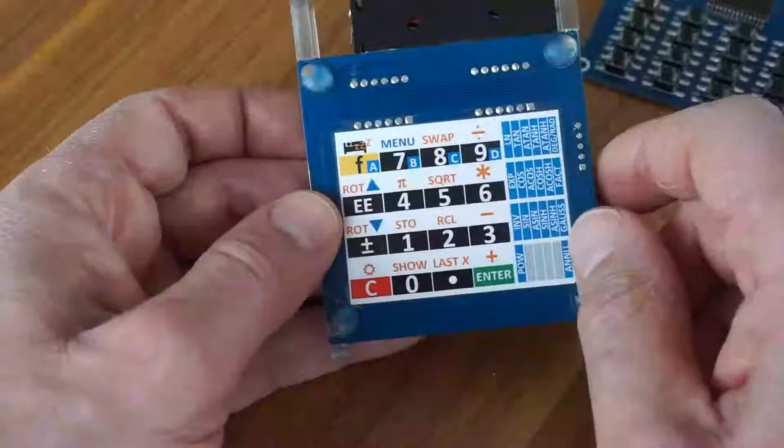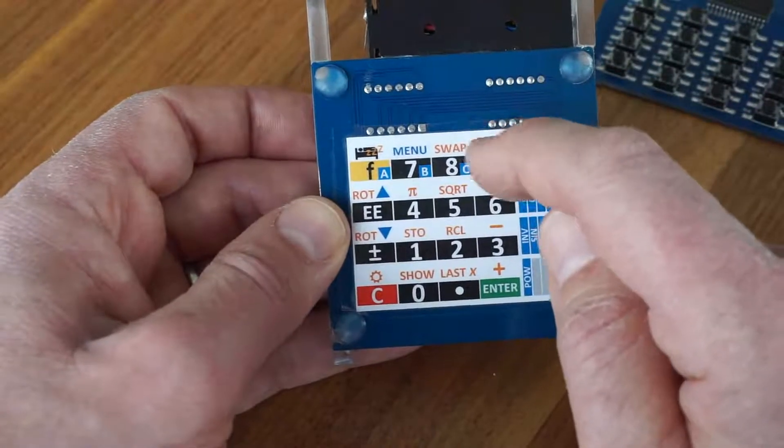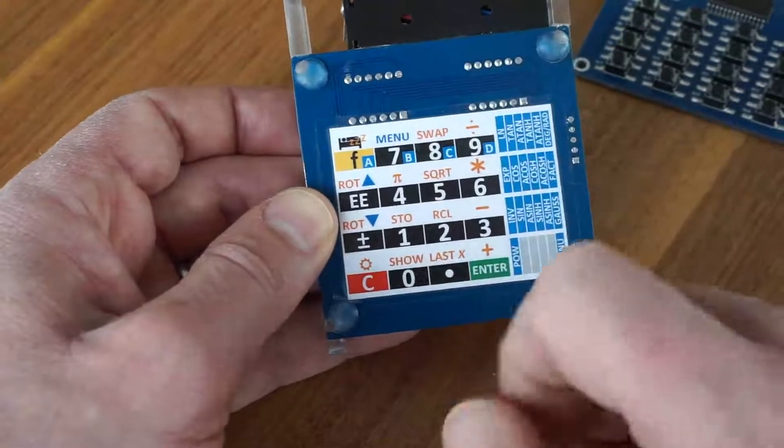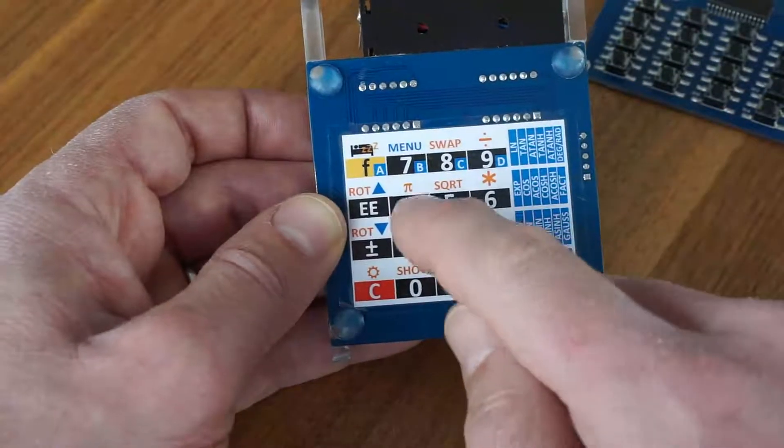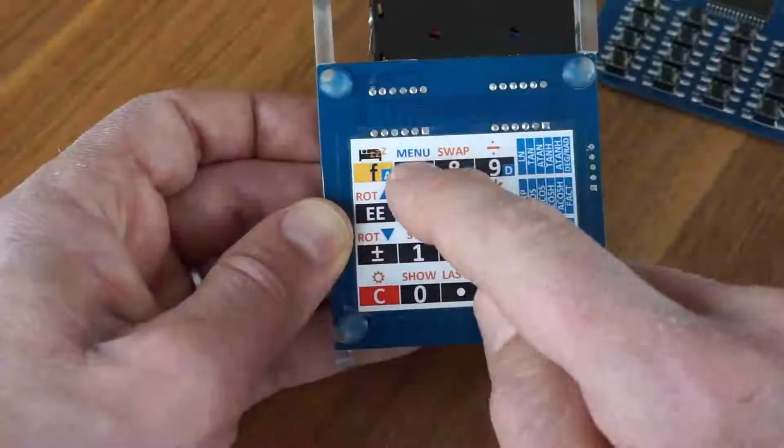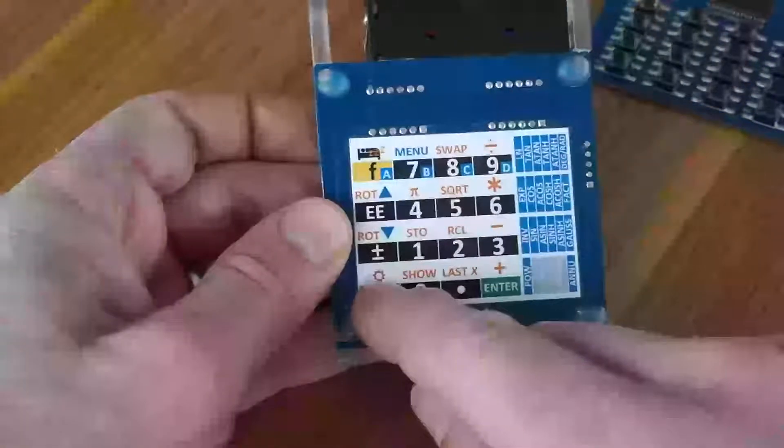So as you see, there are standard stack operations like swap or last X, one memory to store to recall the value, square root, and special keys like the menu key or here the shift C brightness key.